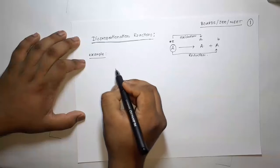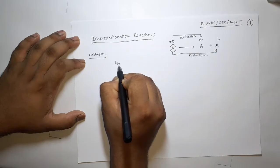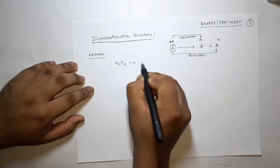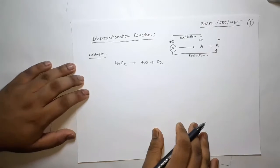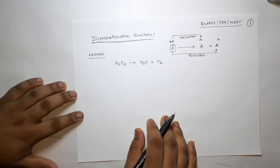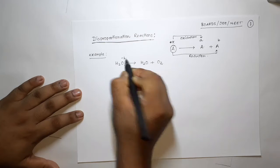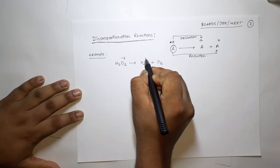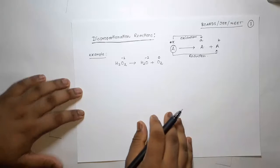A simple example is hydrogen peroxide decomposition. Hydrogen peroxide decomposes into water and oxygen. Let's calculate the oxidation number of oxygen in all elements here. Since it's a peroxide, the oxidation number of oxygen is minus 1. In water the oxidation state is minus 2, and in pure oxygen the oxidation state is 0.